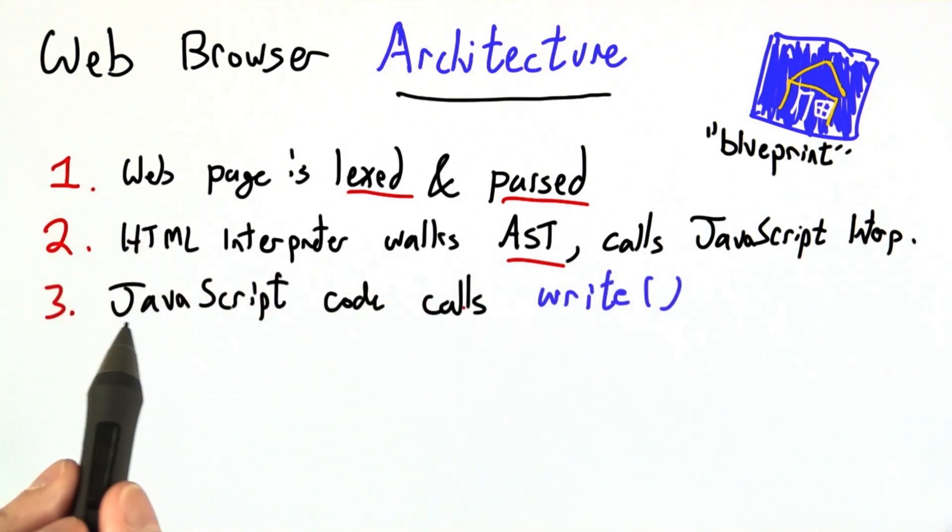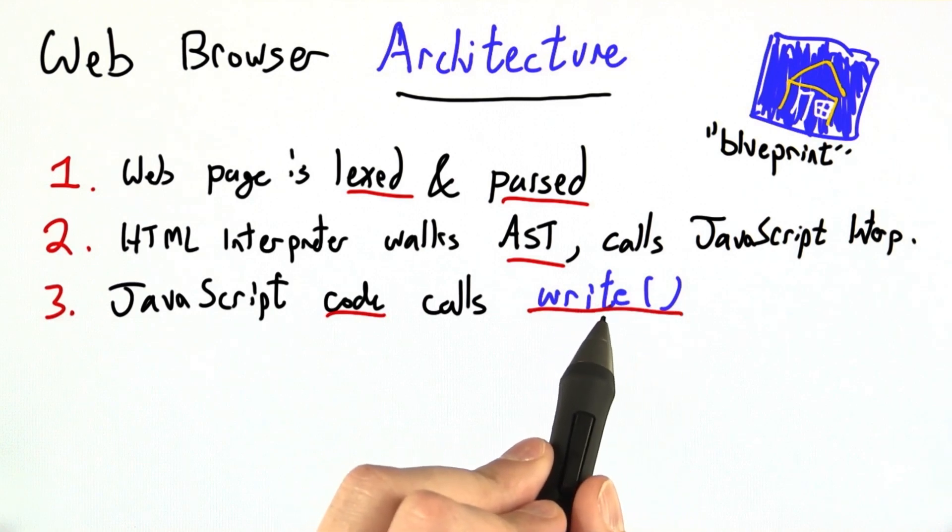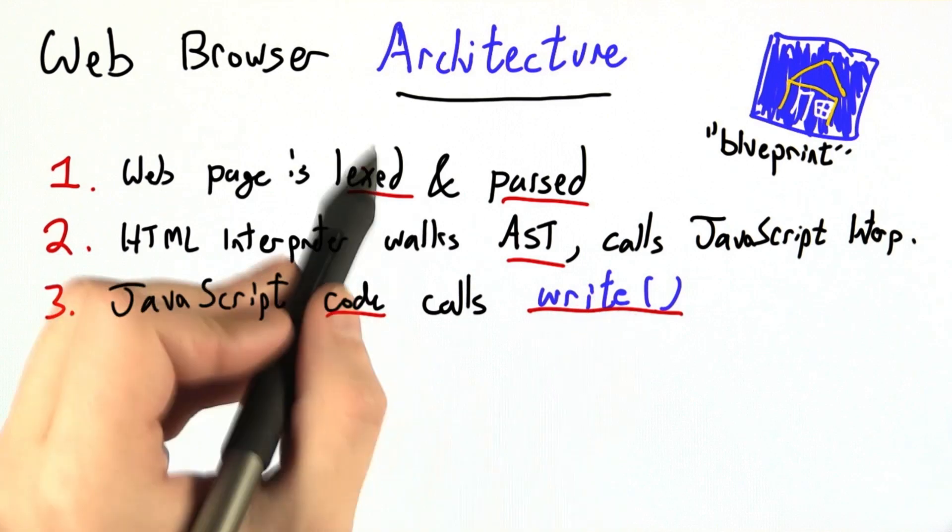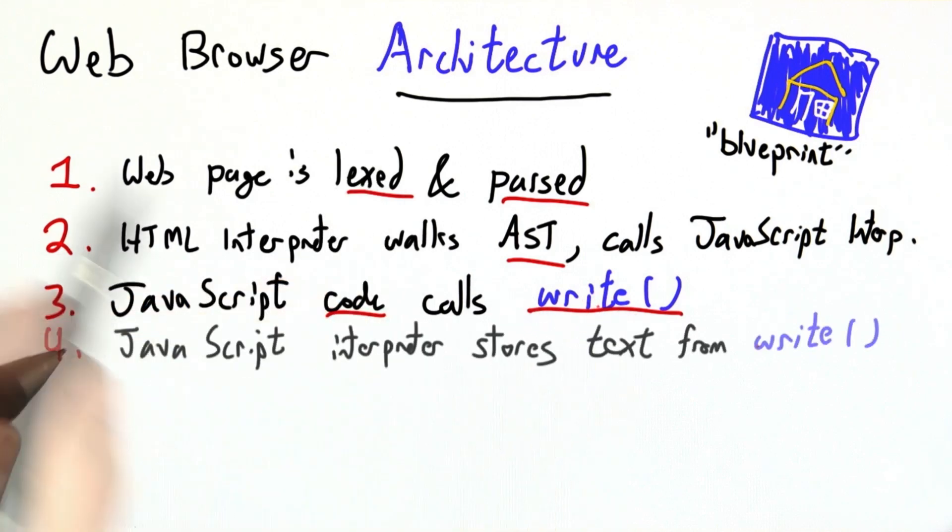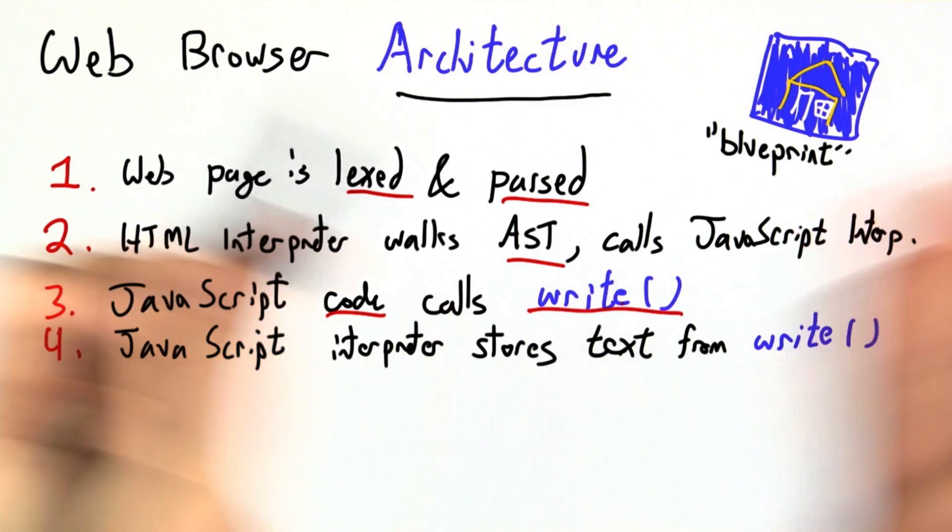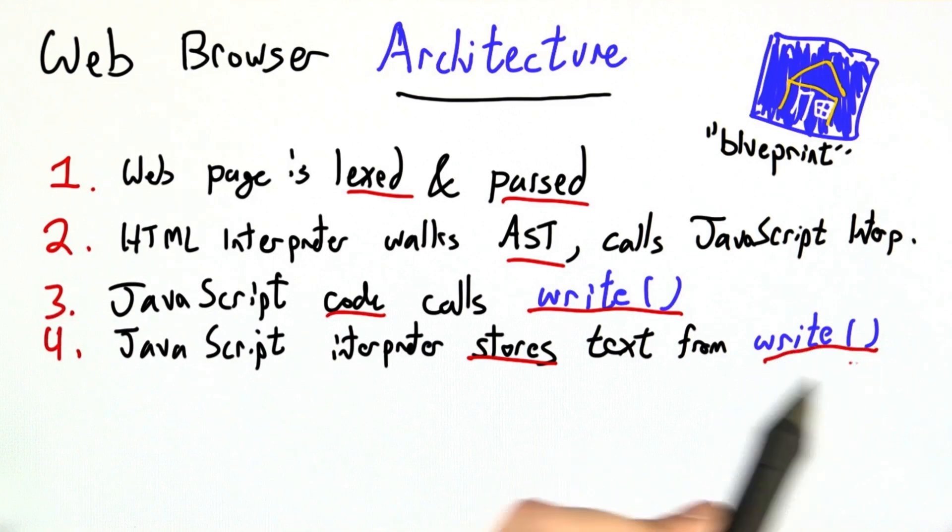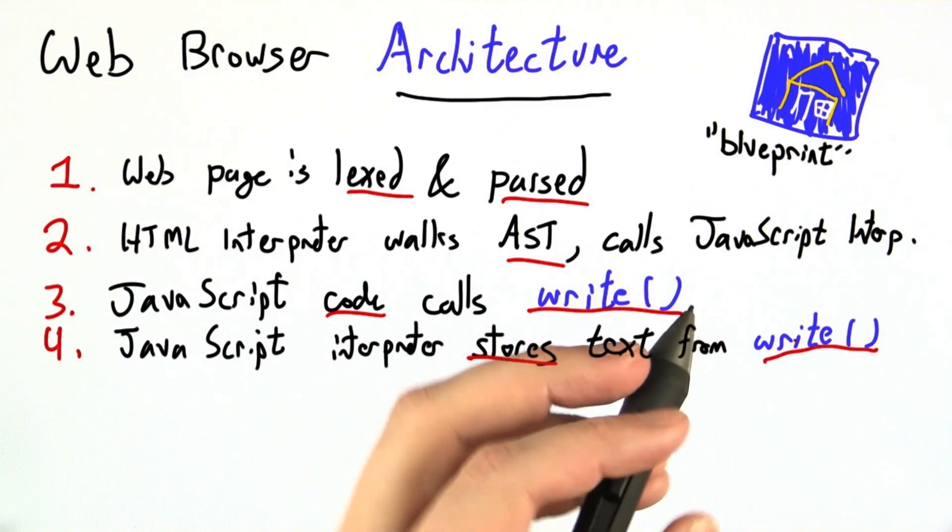In most cases, at some point, the JavaScript code from the user will call write or document.write, and that's that function that says, if I'm in JavaScript, display this on the resulting web page. Because the meaning of a JavaScript program that calls write is that that text should be displayed, we'll definitely want to store all of the text from write so that we remember to include it in the web page later.